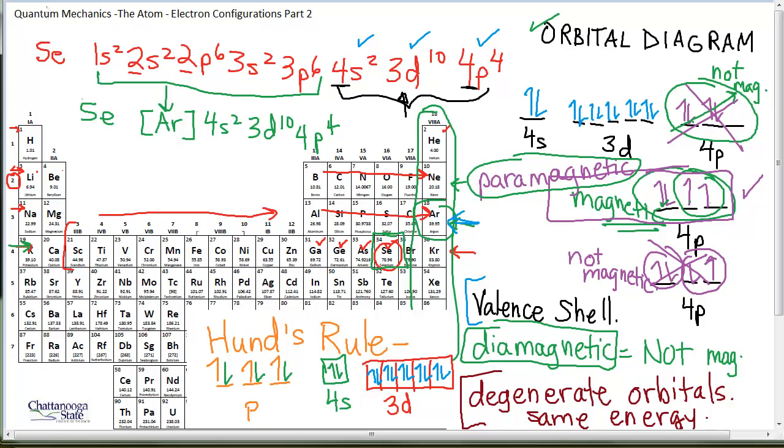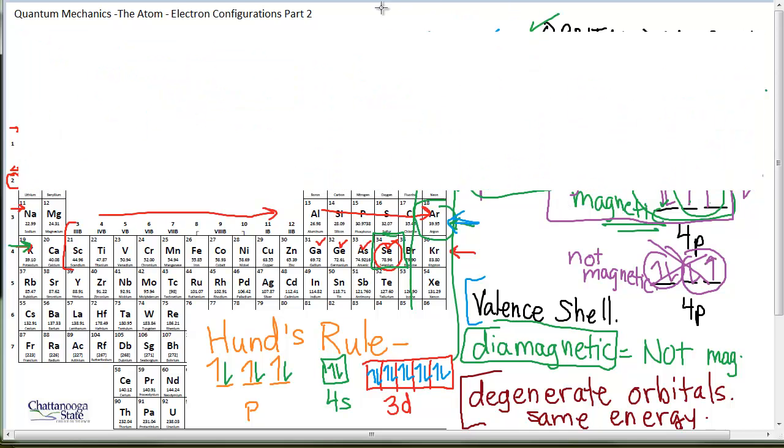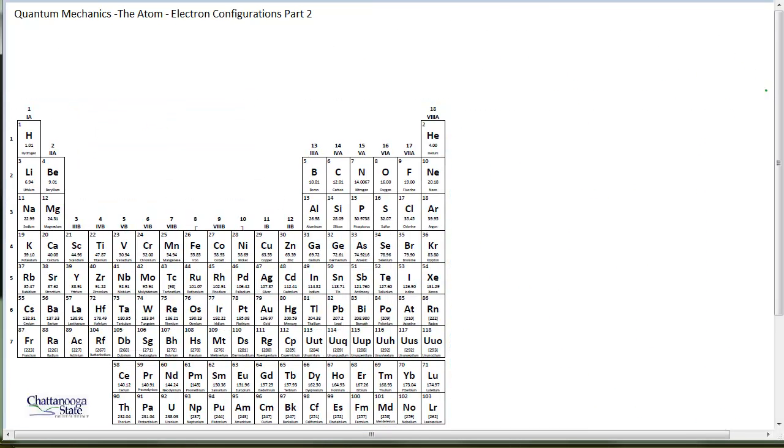All right, I want to show you one last thing concerning the electron configurations, and that would be exceptions to what we've just been talking about. All right, there are a couple of elements that end up being an exception to Aufbau, that idea of building up on the periodic table. And they are very predictable, and you simply have to memorize them. The first one occurs with chromium. If we were writing the electron configuration of chromium using the principles we've just been talking about, we would start with argon for our shortcut notation, our nearest noble gas, and then we would write 4s2, 3d, count it up, 1, 2, 3, 4.